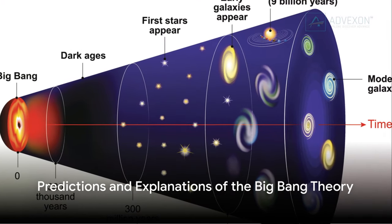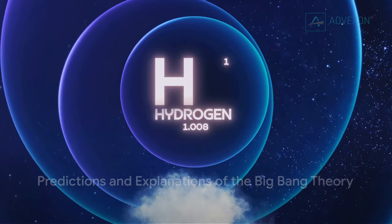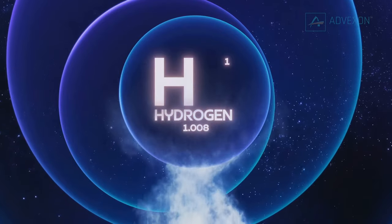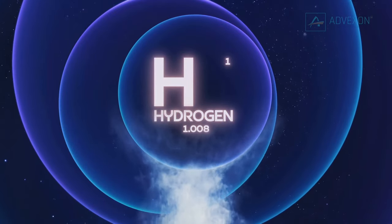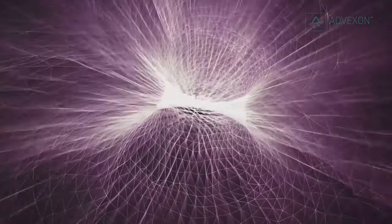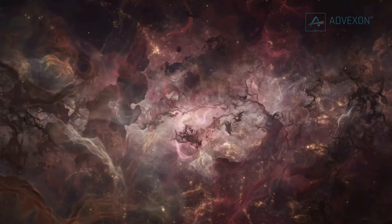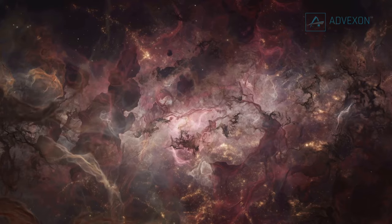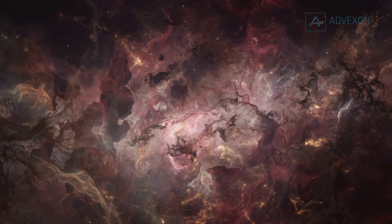The Big Bang theory doesn't just stop there. It also predicts the abundance of light elements in the universe like hydrogen, helium, and lithium. The theory also explains the large-scale structure of the universe. The galaxies we see today are a result of tiny fluctuations in the density of the early universe.